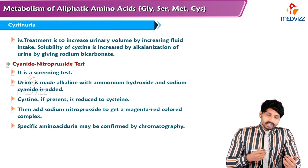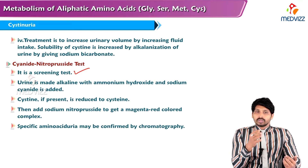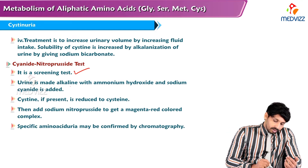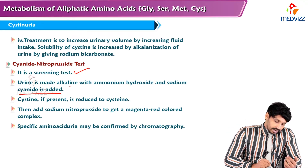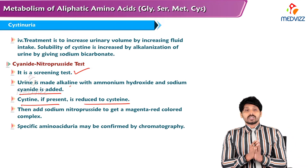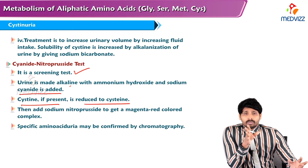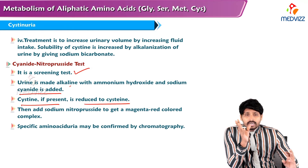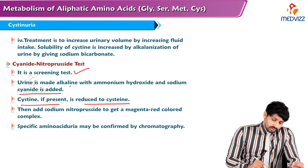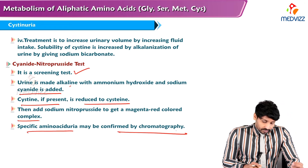In cystinuria, crystalluria and calculi formation also occur. High concentrations of cysteine in renal tubules at acidic pH lead to cysteine crystal formation in urine and obstructive uropathy, which may lead to renal insufficiency. Treatment involves increasing urinary volume by increasing fluid intake, and alkalizing the urine with sodium bicarbonate to increase cysteine solubility.